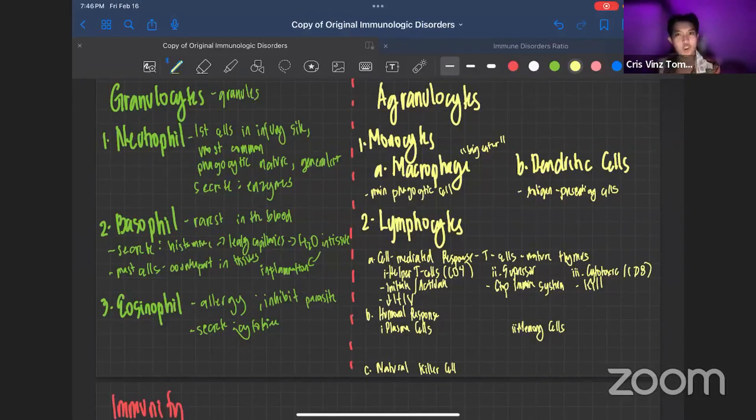Then suppressor T-cells say no, no, no, that's self cells. That's not non-self. That's the work of suppressor T-cells. That's why they are usually decreased with our autoimmune conditions. They are usually decreased with our autoimmune conditions.